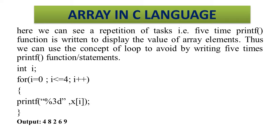अब यह small code जब execute होगा तो output देगा: 4 8 2 6 9 — जो हमने array में store किया था। यहां पर आप देख रहे हैं percent 3d — यह 3d क्या है? 3 represent करता है integer width, और d specify करता है कि हम integer data पर work कर रहे हैं। हर एक value के बीच में 3 spaces create करेगा, जिससे कि हमारा output बिल्कुल clear दिखे।